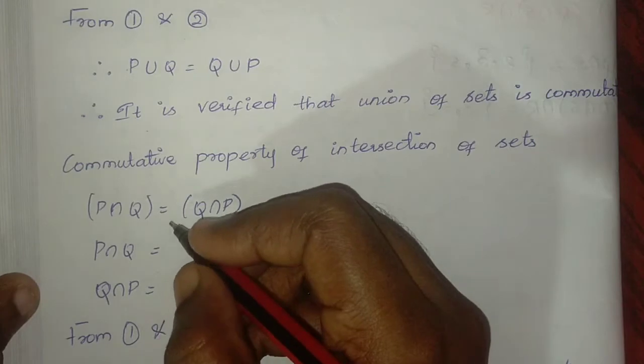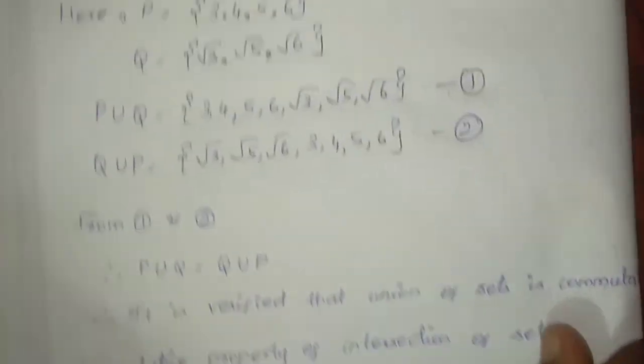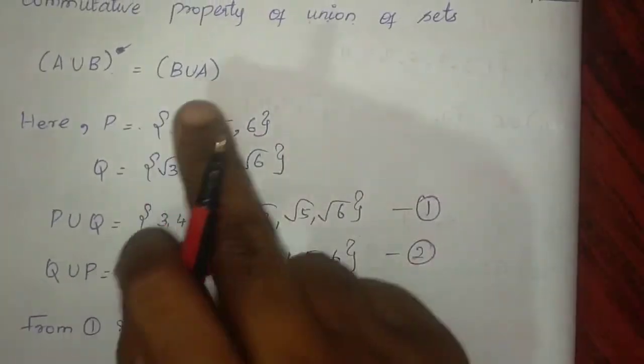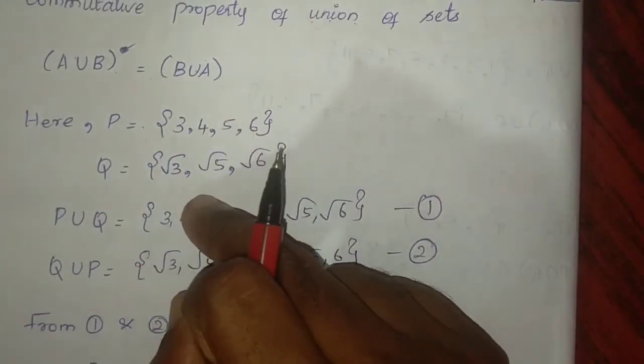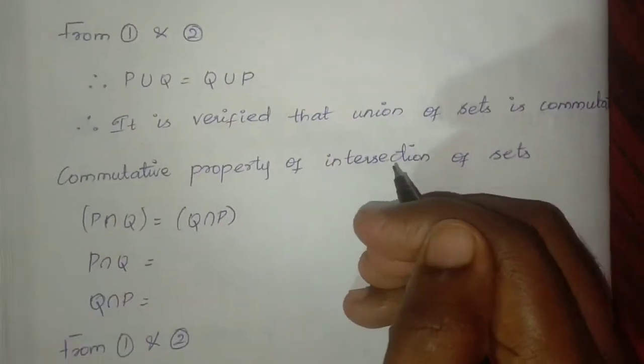P intersection Q: if the two sets have no common numbers, the result is the empty set.